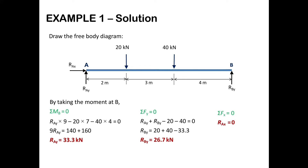Now we apply the equations of static equilibrium. The first equation is summation of moments at point B equal to zero. Clockwise moment about B is positive and anticlockwise is negative. The vertical force RAY at a distance of 9m from B generates a clockwise moment, so: RAY × 9 − 20 × 7 − 40 × 4 = 0. This gives us RAY = 33.3 kN.